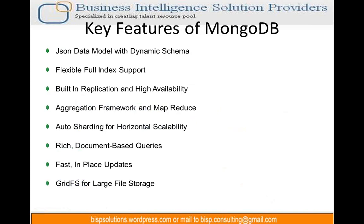Key features of MongoDB: first is the JSON data model with dynamic schema. Everything is stored as key-value pairs — that's the data model. The schema is dynamic, meaning it's not fixed. In RDBMS the schema is static. With a dynamic schema, we can add or delete columns at will.